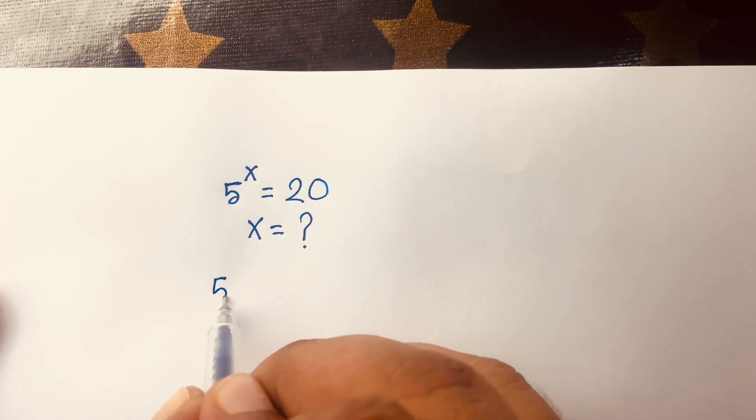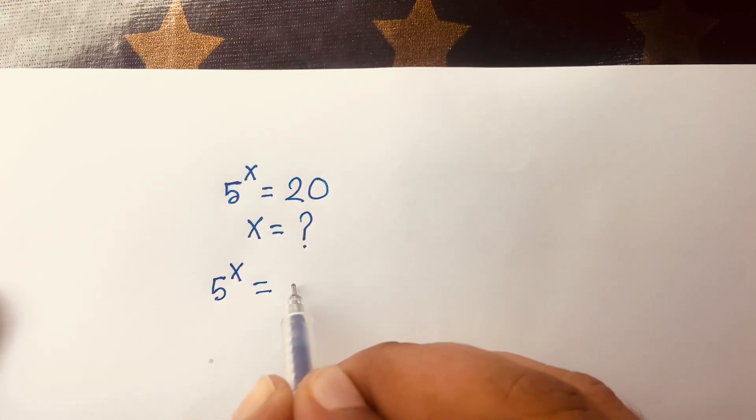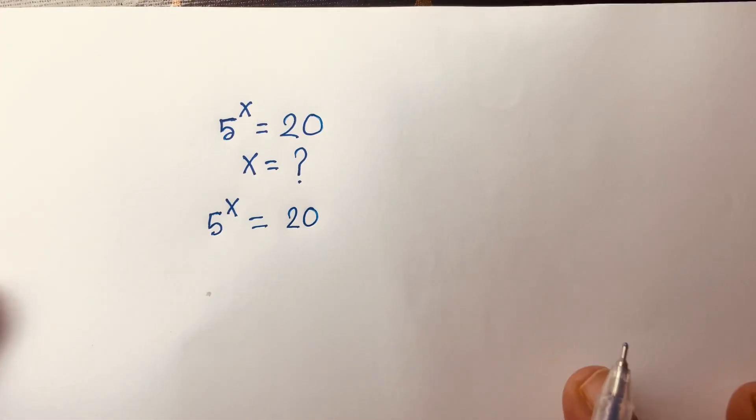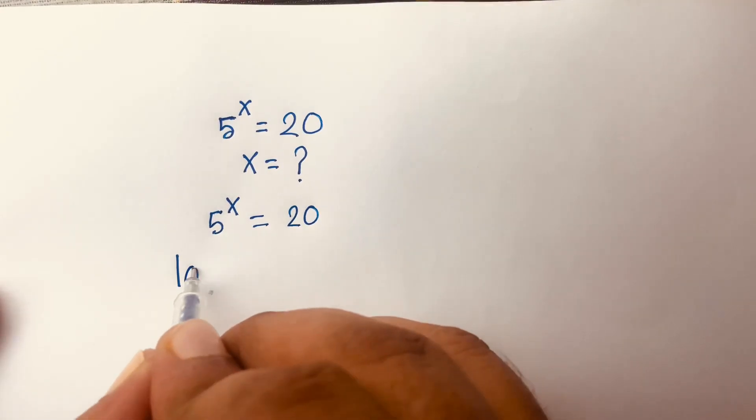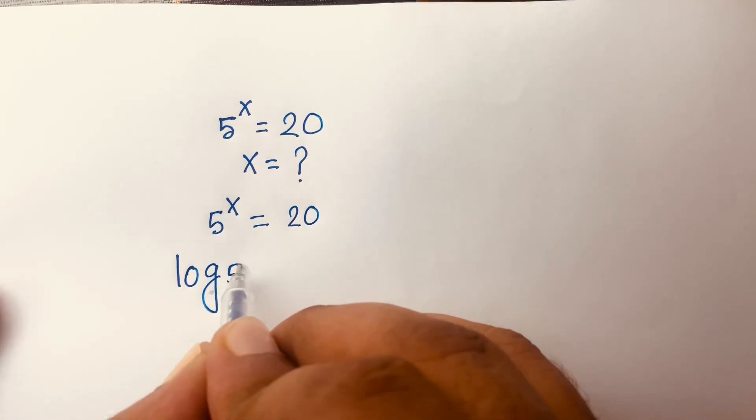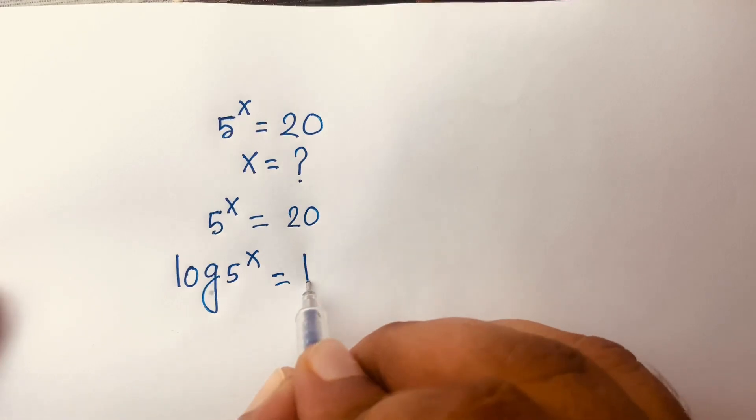So our question is 5^x = 20. Then I use log on both sides, so I can say log(5^x) = log(20).